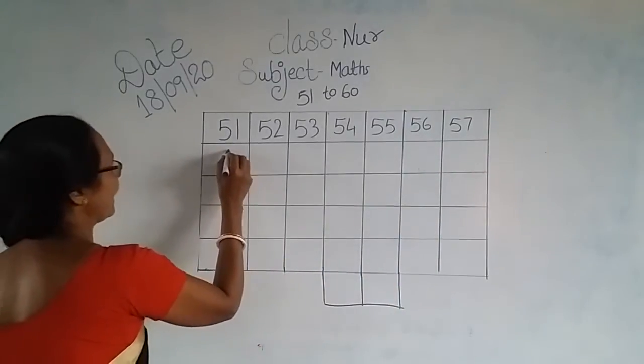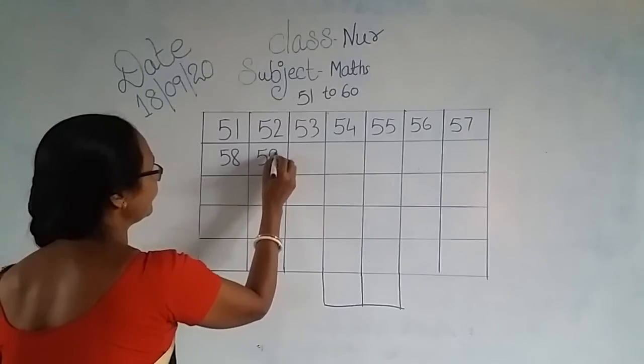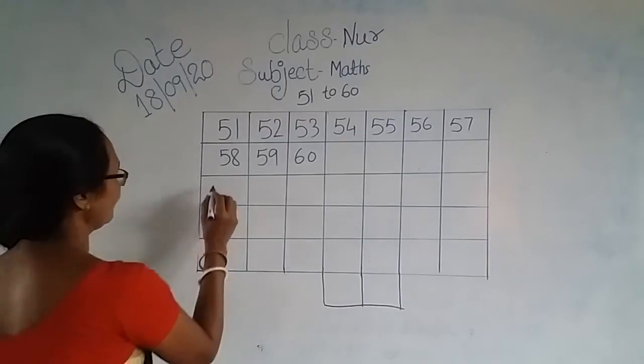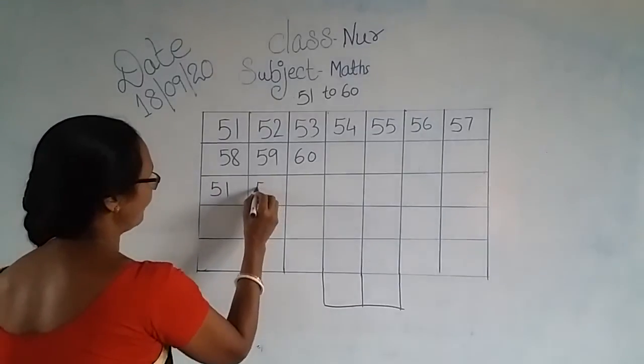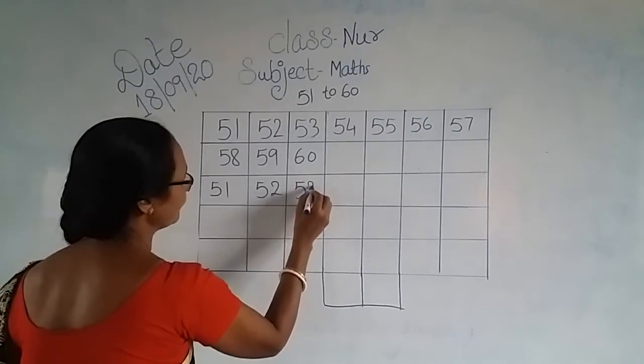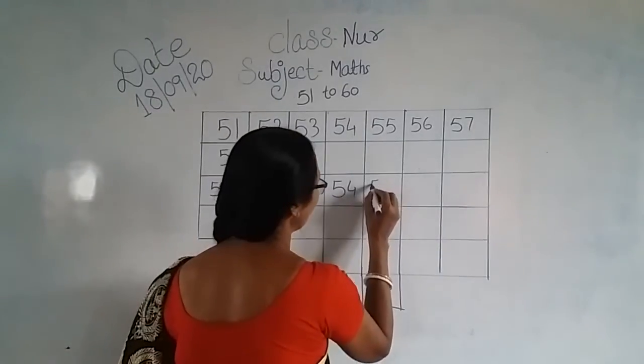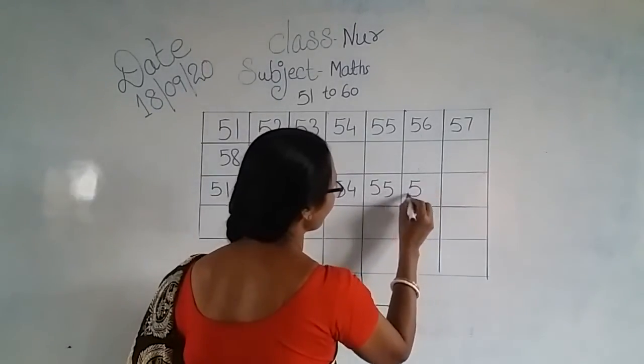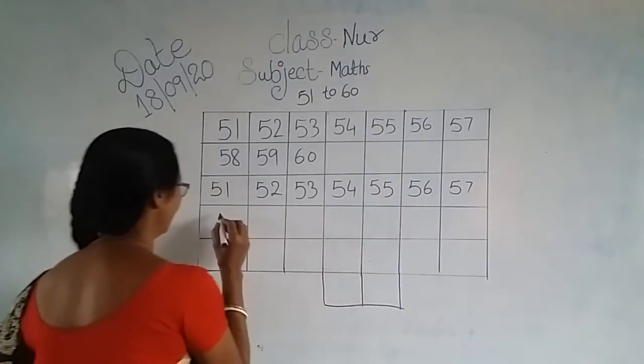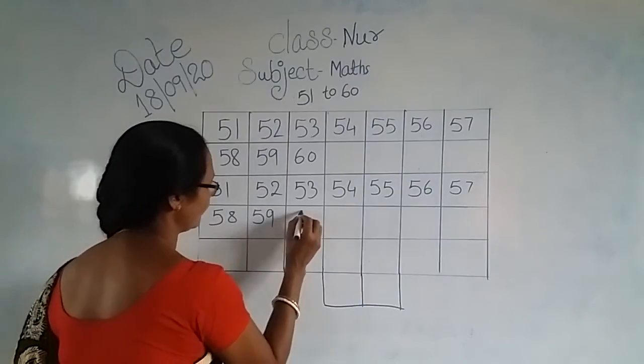5-8 is 58, 5-9 is 59, 6-0 is 60. Again: 5-1 is 51, 5-2 is 52, 5-3 is 53, 5-4 is 54, 5-5 is 55, 5-6 is 56, 5-7 is 57, 5-8 is 58, 5-9 is 59, 6-0 is 60.